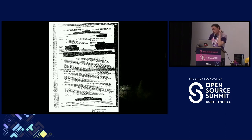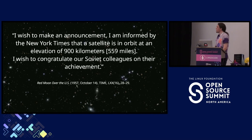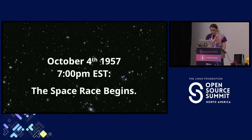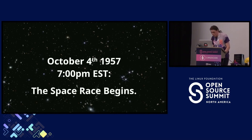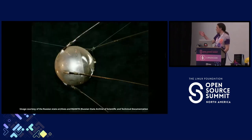A New York Times reporter, who'd just gotten off the phone, scurried in and whispered something in his ear. Dr. Berkner then made the following announcement: 'I wish to make an announcement. I am informed by the New York Times that a satellite is in orbit at an elevation of 900 kilometers, or 559 miles. I wish to congratulate our Soviet colleagues on this achievement.' And so, on October 4th, 1957, at 7 p.m. Eastern Standard Time, the space race begins. The satellite in question, SP-1, later called Sputnik — which I believe is the Russian phrase for 'fellow traveler' — was a minimum-effort satellite proposed after the initial plans for the larger Object D satellites faced some setbacks.